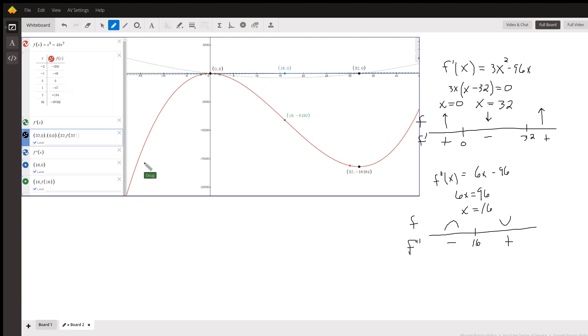Okay, here's the graph. This red graph is the graph of the original function. And in light green here, we've graphed the first derivative. And that first derivative is equal to 0 at 32 for x and at 0 for x.